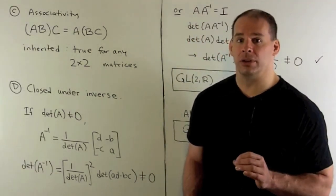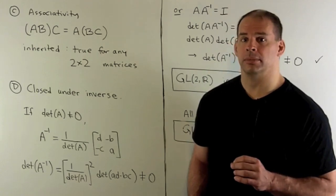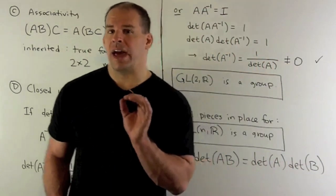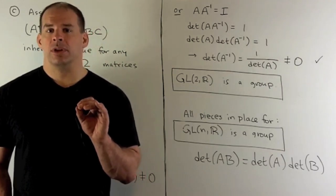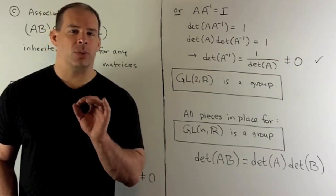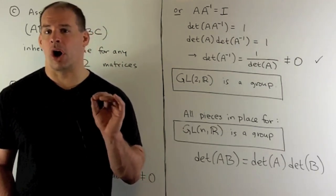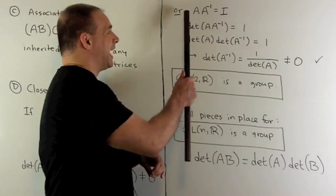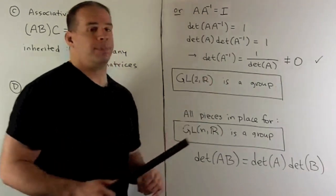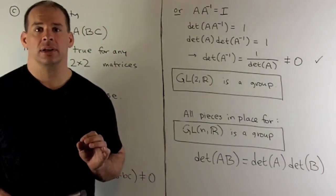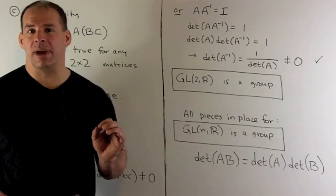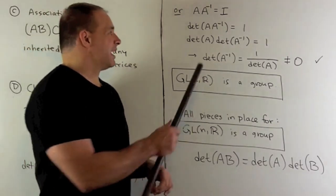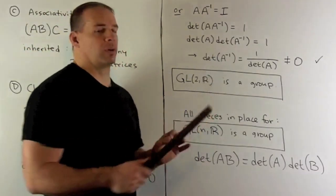Now to do that a little bit more abstractly, so I don't have to force myself to work with two by two matrices—I want an argument that works in general. What I could do is note A times A inverse is the identity. Take the determinant of both sides, so the determinant of the identity matrix is going to be one. And then here we're going to use our rule from before.